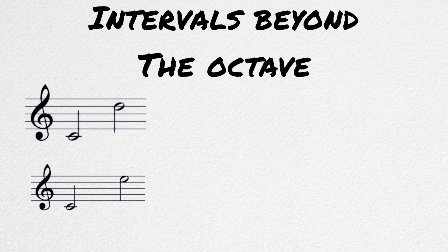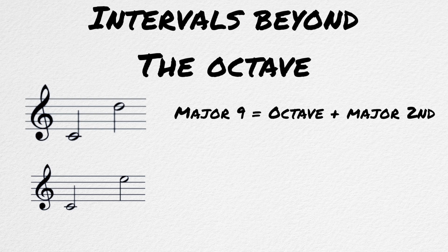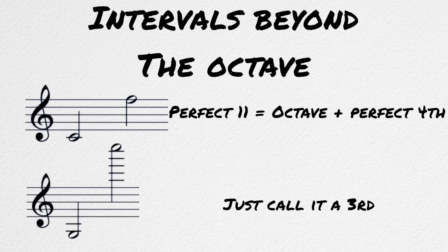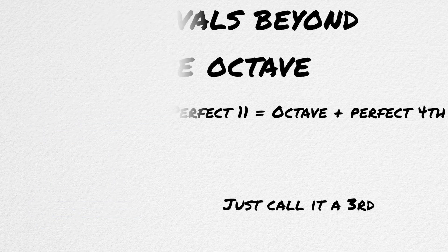All of the intervals we've discussed so far are within one octave. But intervals can keep going past the octave. The numbers just keep going up past eight. A ninth is an octave plus a second. A tenth is an octave plus a third. An eleventh is an octave plus a fourth, etc. When the intervals start to get really big, they're usually just referred to by their one octave equivalent. A distance of three octaves and a third may just be referred to as a third, or a tenth, to stop people from having to count out a major twenty-fourth.